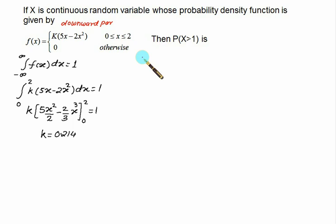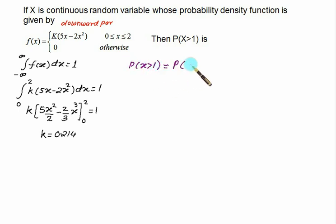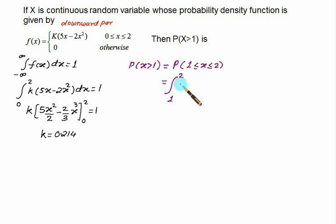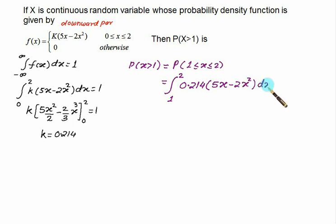For P(x > 1), since the range is valid only for 0 to 2, P(x > 1) is equivalent to P(1 ≤ x ≤ 2) for a continuous random variable. We set up the integral from 1 to 2 of 0.214 × (5x − 2x²) dx.